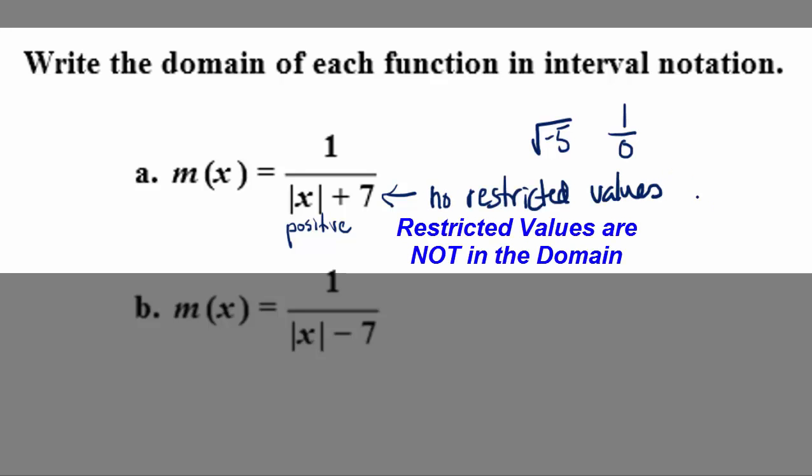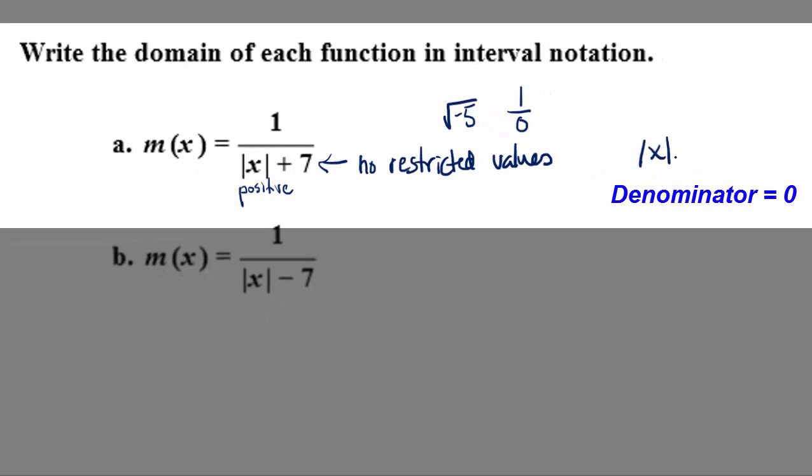Now a lot of students don't like that because you're not solving an equation. So here's another way to think about it. Whenever you have a denominator, set the denominator equal to zero. In this case, absolute value of x plus seven equals zero, and then solve the resulting equation.